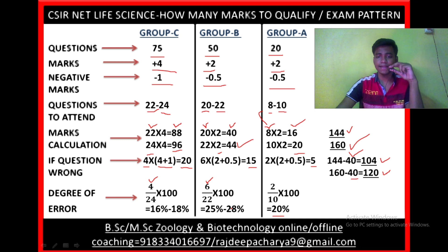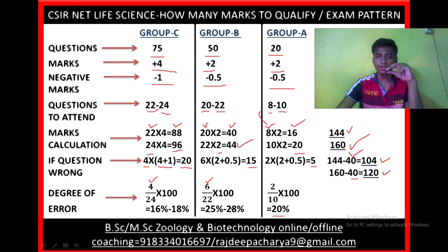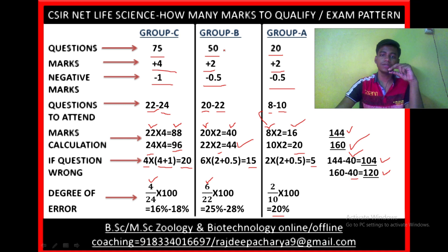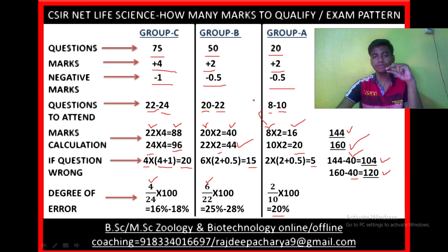Before selecting any answer, be very careful. Group C has 75 questions but each question is very analytical. Group B contains very memory-based questions, and Group A contains straightforward questions. So choose wisely which questions to attempt.